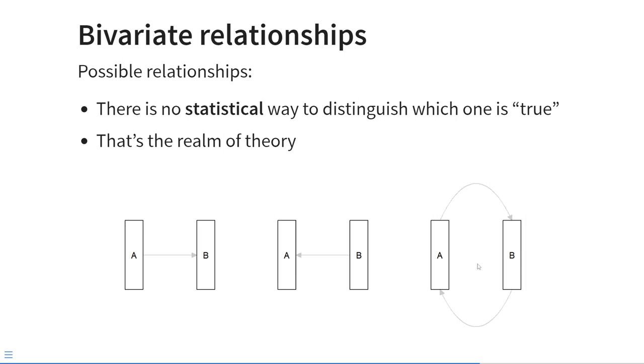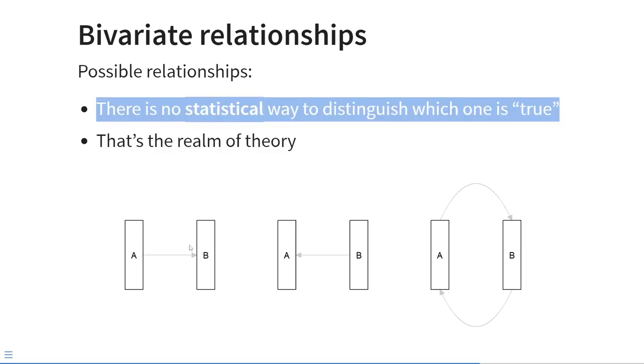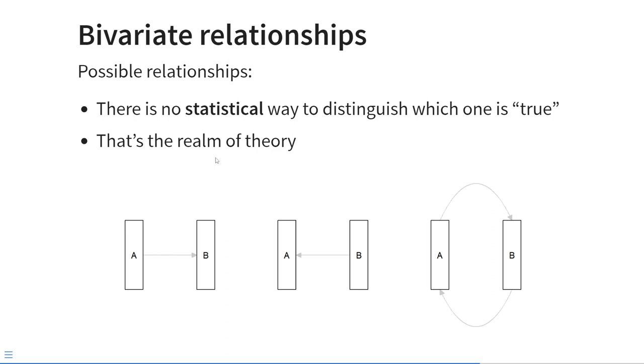With two variables, we have three possible situations. One situation is that variable A causes variable B. The second situation is that variable B causes variable A. And the third situation is that they both cause each other. Crucially, there is no statistical way to determine whether situation A is true, or situation B is true, or situation C is true. That's the realm of theory. So you have to use theory to decide if you are in situation A, or situation B, or situation C.